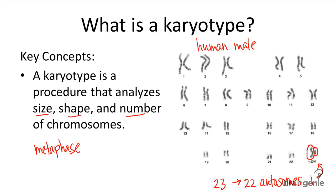Karyotypes can be important tools for analyzing and researching an individual's genetic makeup, particularly for identifying genetic diseases. For example, Down syndrome is caused by having a partial or full extra 21st chromosome. It would look something like this — you'd have another chromosome right there — and a karyotype quickly helps identify this condition.